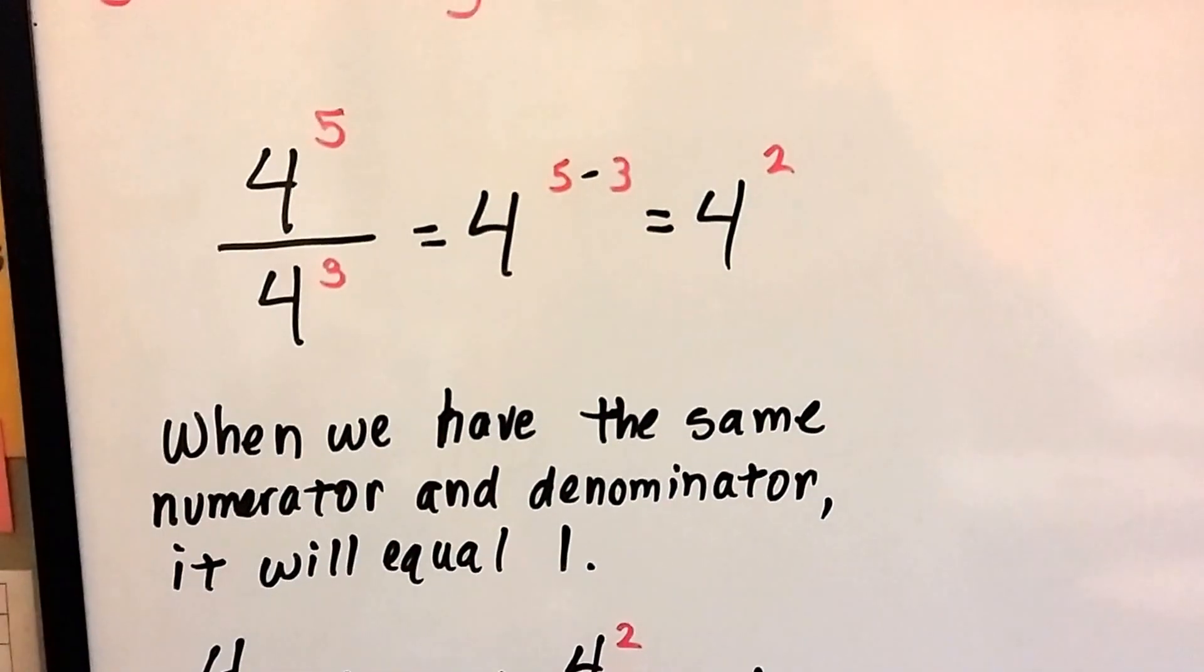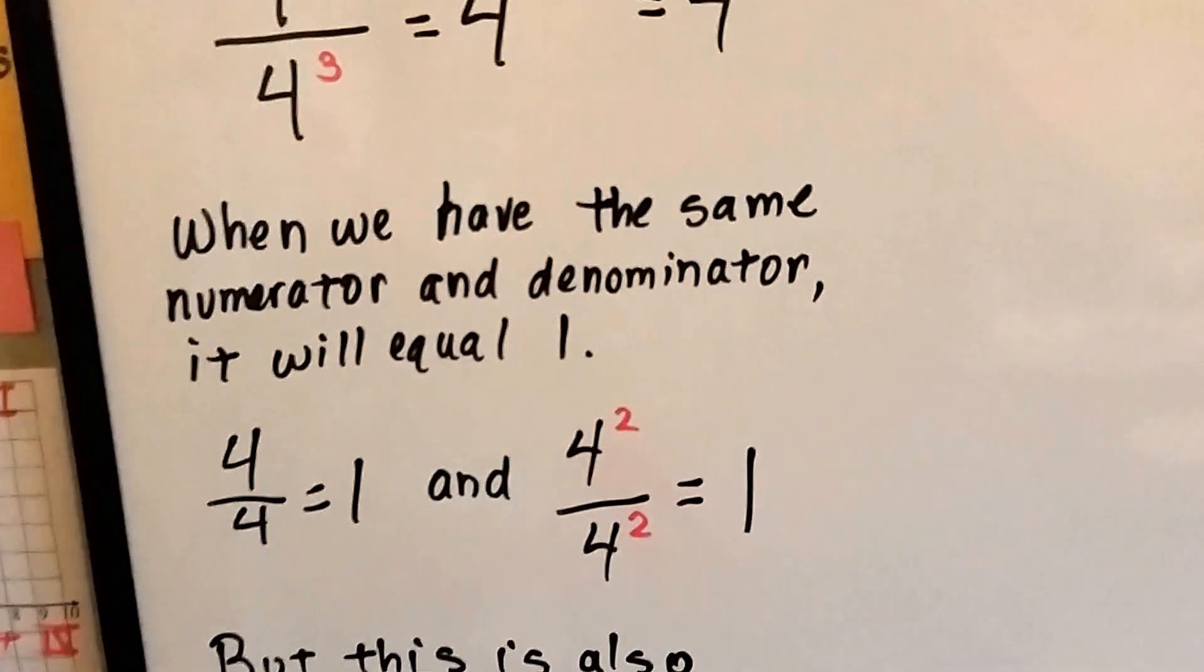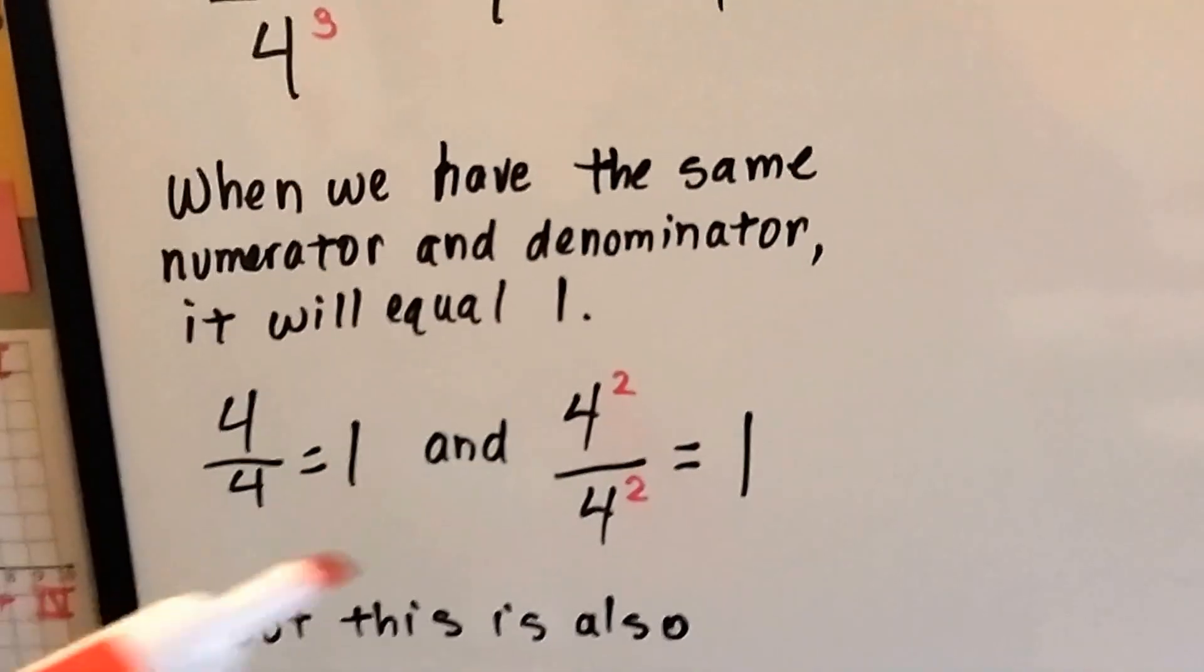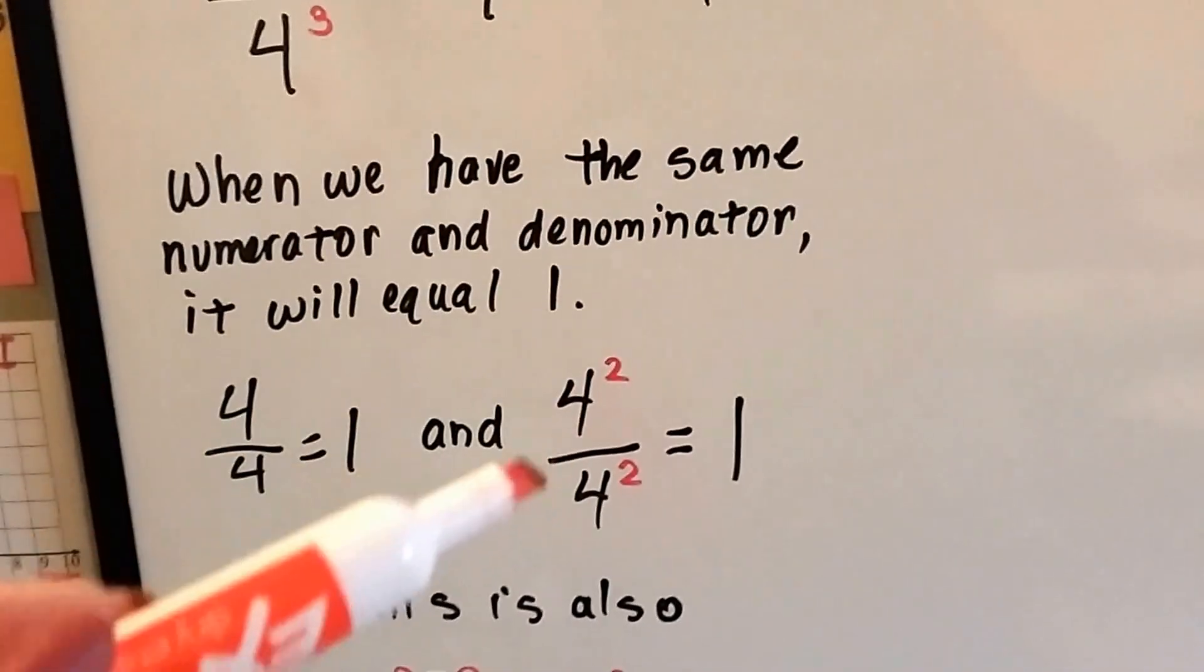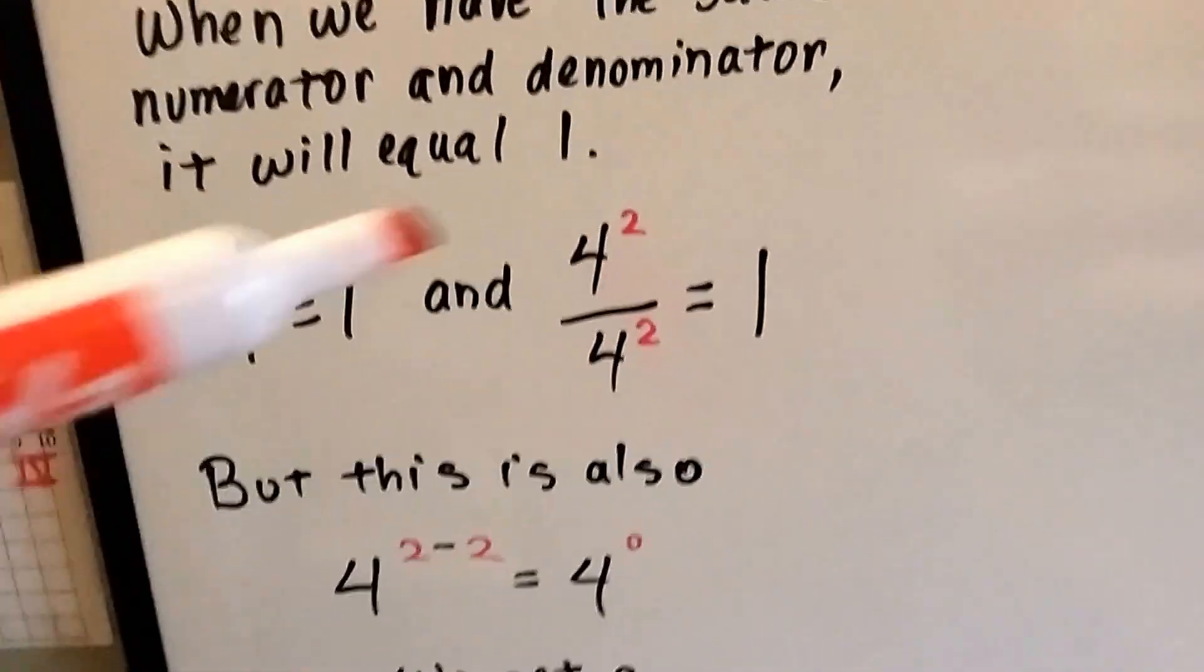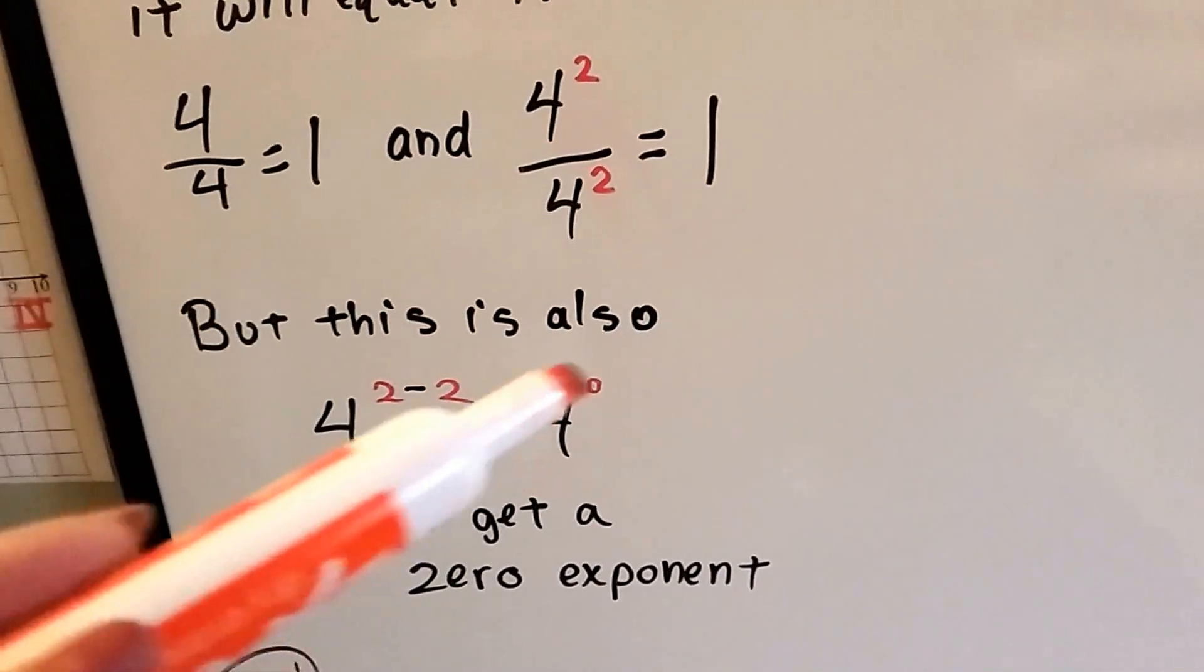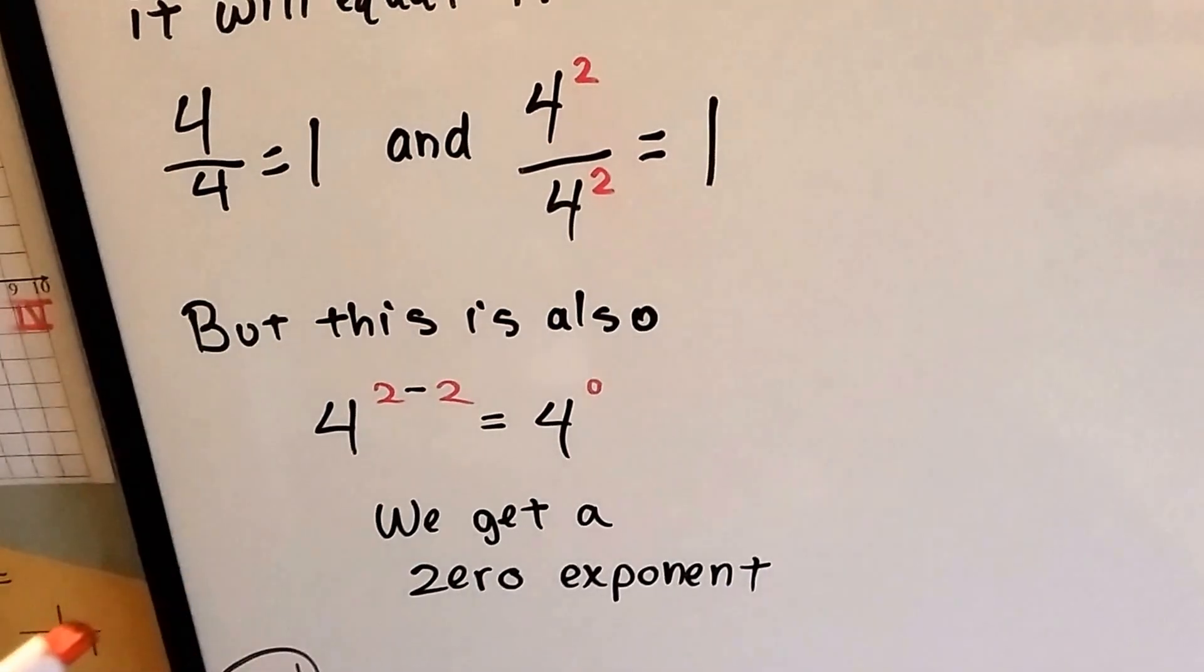When we have the same numerator and denominator, it'll equal 1 because the numerator and denominator are the same. So if we have 4 to the 2nd power over 4 to the 2nd power, this is going to be 1. But what happens when we do 2 take away 2? We get 4 to the 0 power. We get a zero exponent.